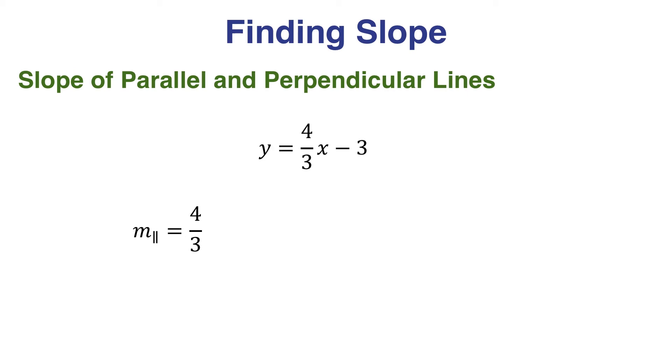But what about perpendicular? Recall, perpendicular lines have negative reciprocal slopes, so the slope of any line perpendicular to the original line would be negative 3 fourths.